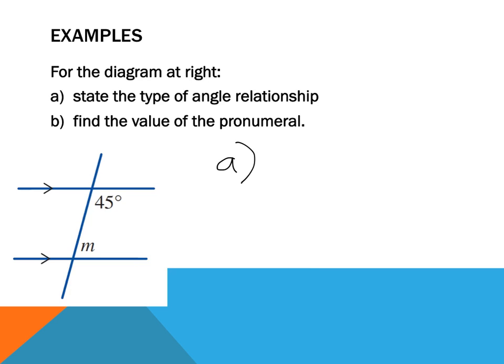So the answer for A: State the type of angle relationship. Well, that's one in there and one in there. They form the C. So the answer is co-interior. That's the angle relationship of those two.